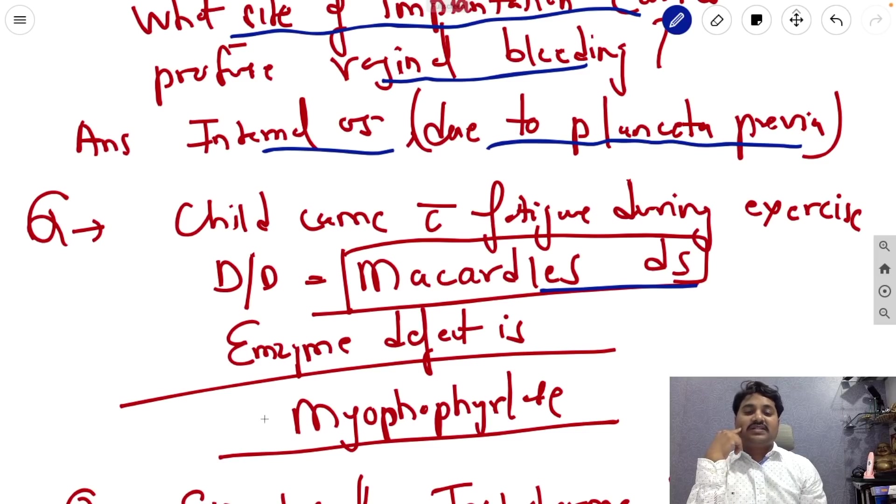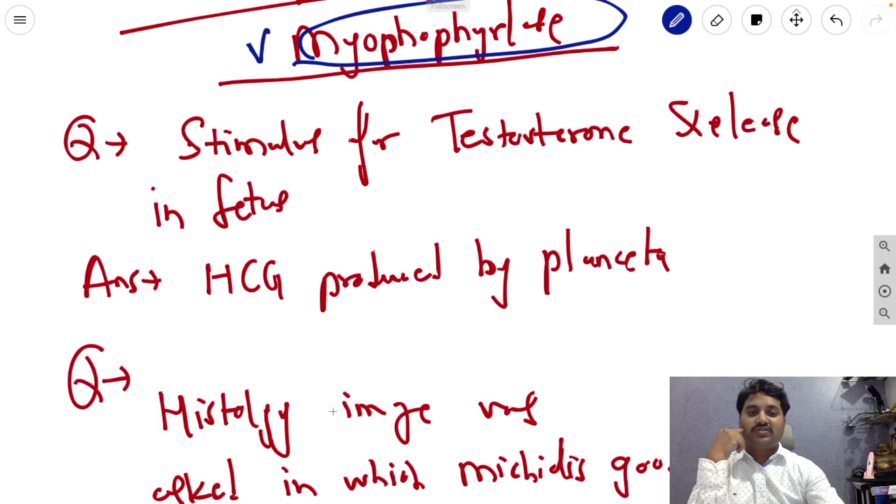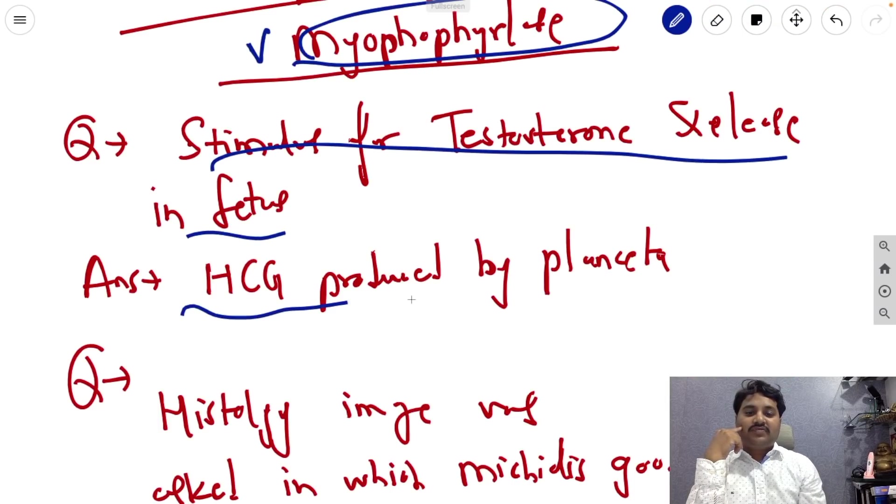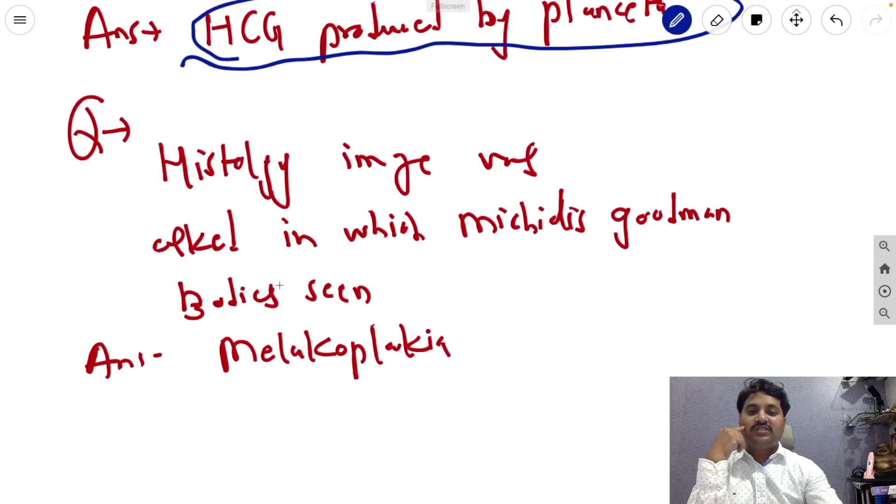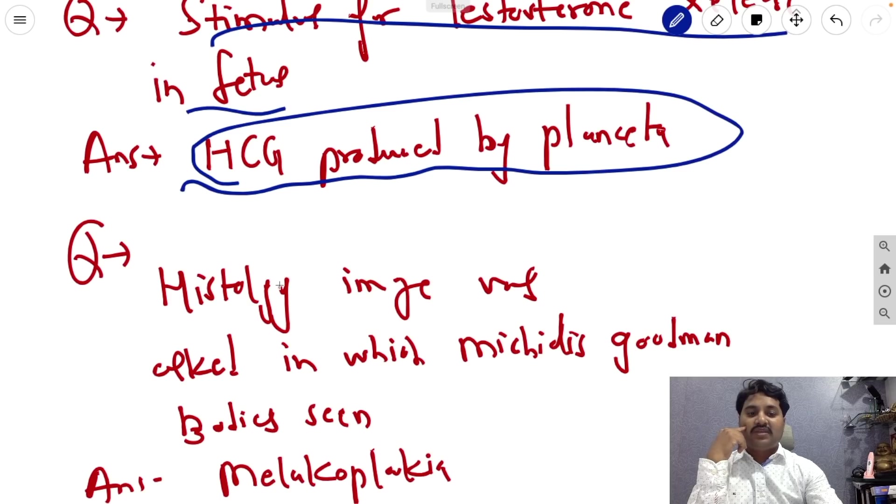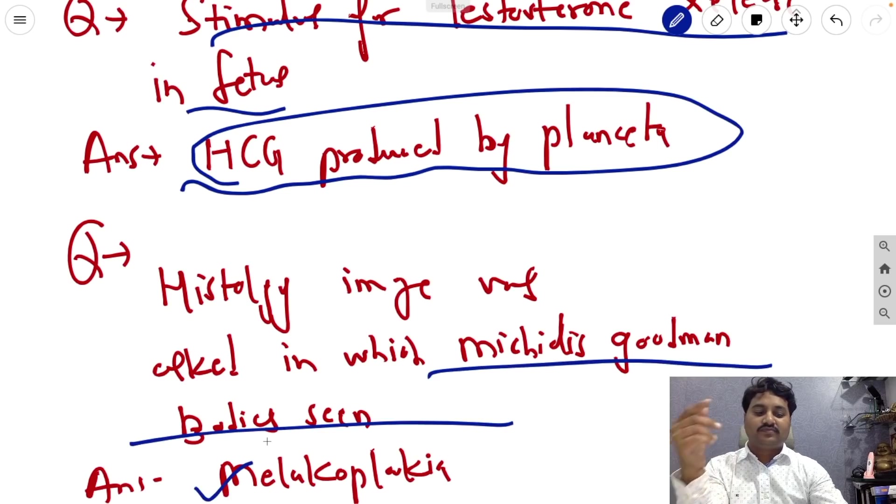Now the stimulus for the testosterone release in the fetus is hCG produced by the placenta. Next question, histology image which was asked, Michaelis-Gutmann bodies are seen. The answer is malakoplakia.